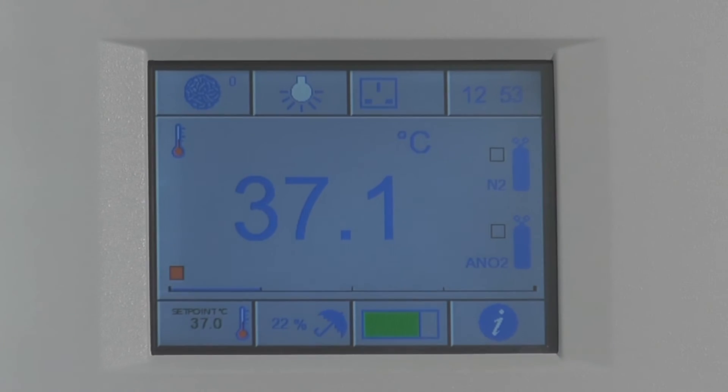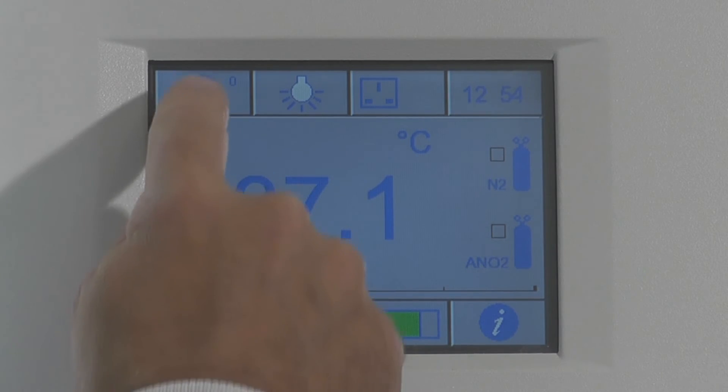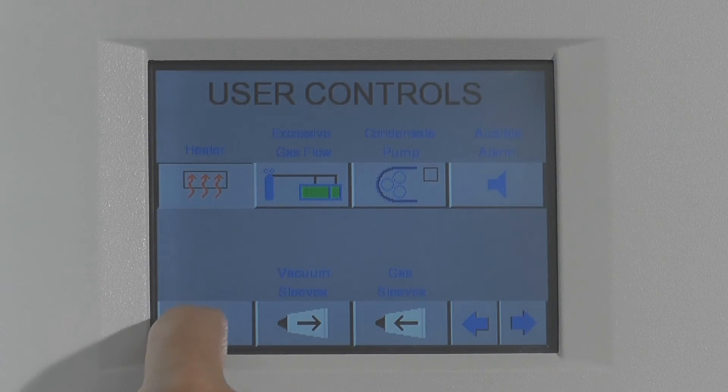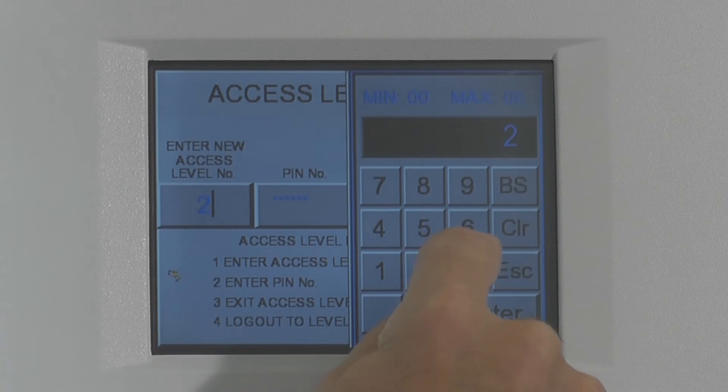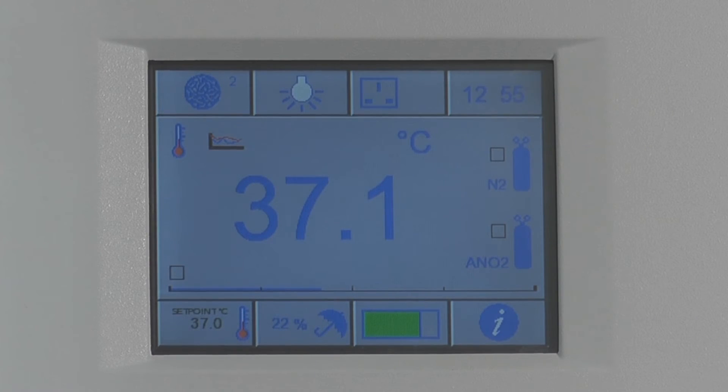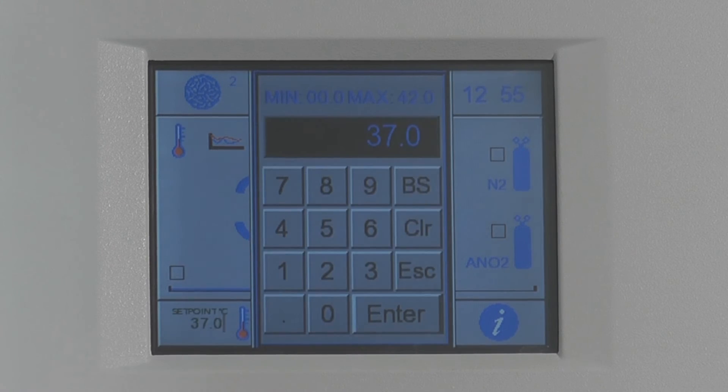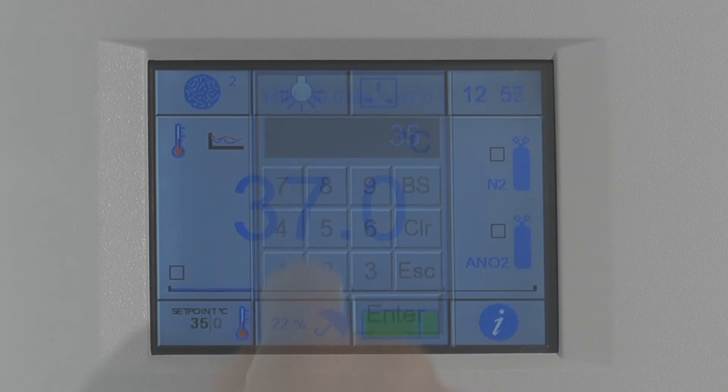The A35 utilizes an innovative touch screen interface with password protected user levels to prevent unauthorized changes to workstation conditions. Temperature and humidity are readily defined by the operator, and a history of workstation conditions can be seen at the touch of a button.